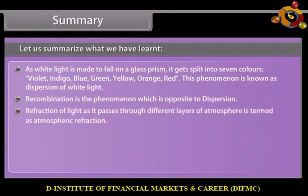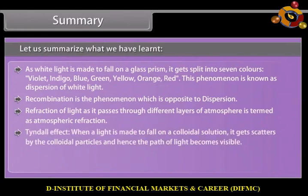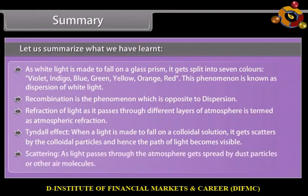Refraction of light as it passes through different layers of the atmosphere is termed as atmospheric refraction. Tyndall effect — when light is made to fall on a colloidal solution, it gets scattered by the colloidal particles and hence the path of light becomes visible. Scattering — as light passes through the atmosphere, it gets spread by dust particles or other air molecules.